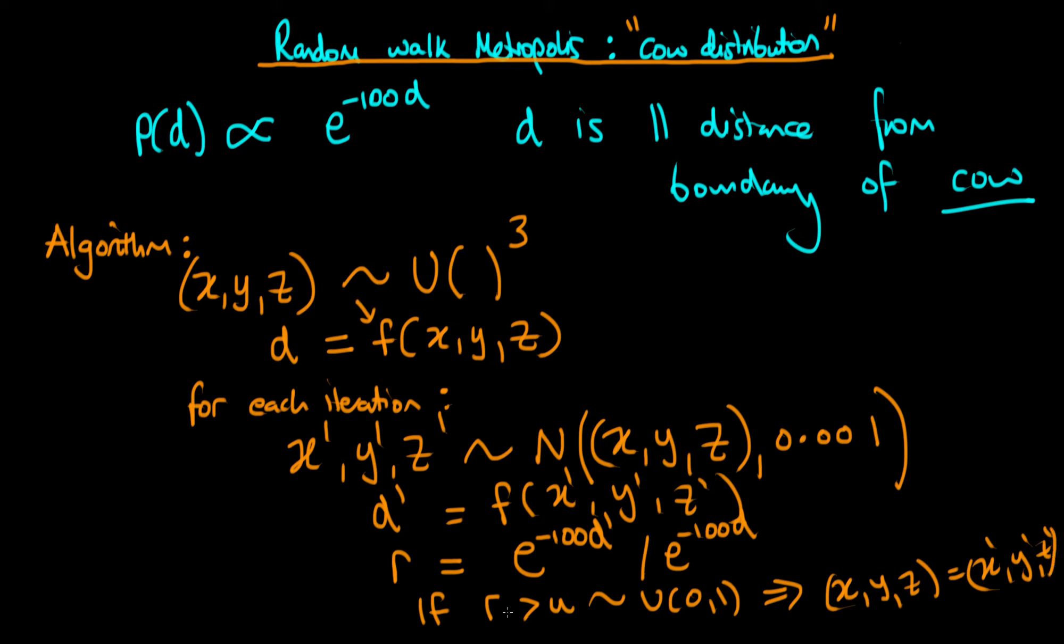Otherwise, if R is less than that, then our current X, Y, and Z stay the same for the next iteration.